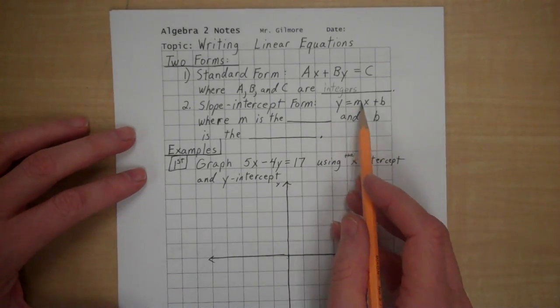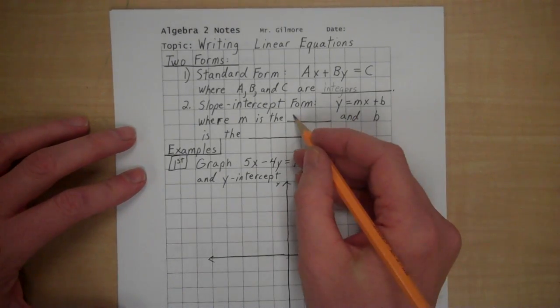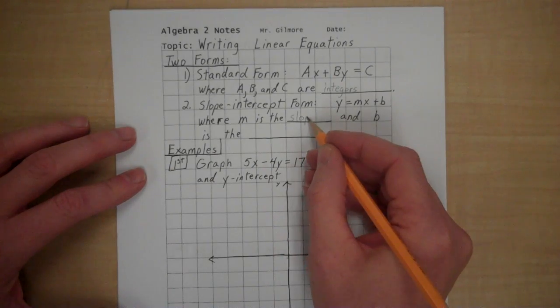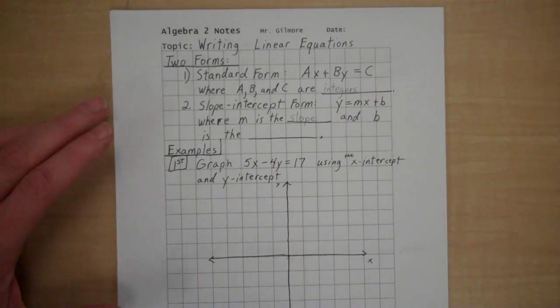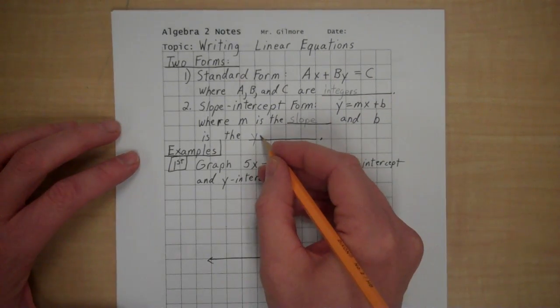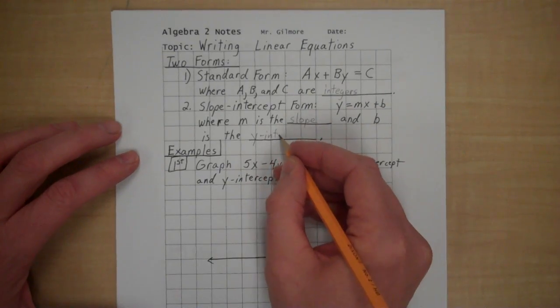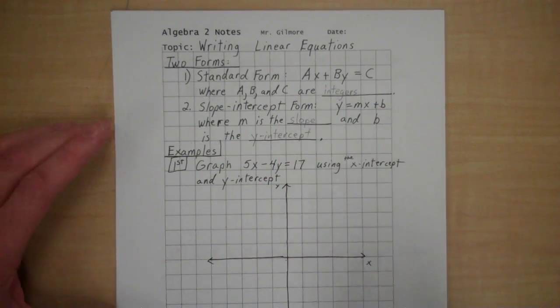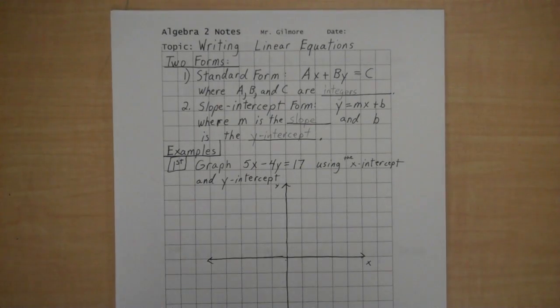Slope-intercept form is y equals mx plus b, where m is the slope of the line, and b is the y-intercept. So those are the two forms. There is a point-slope form, but we're not going to discuss that one.